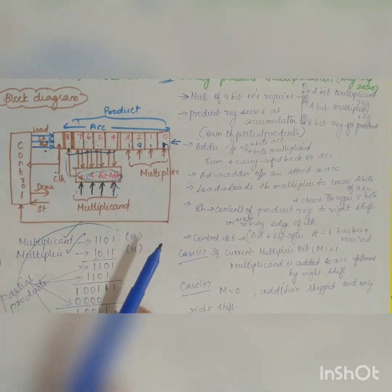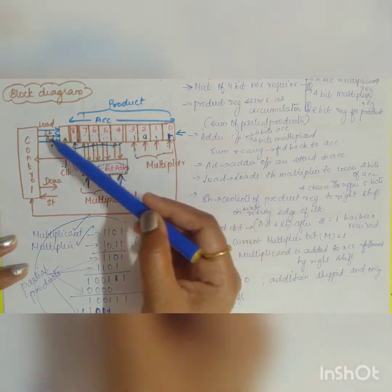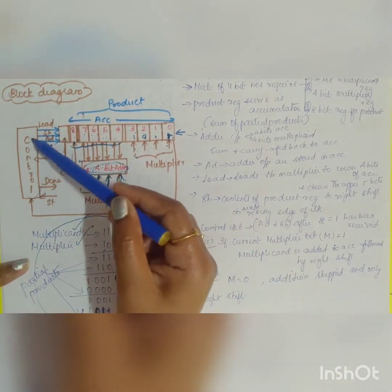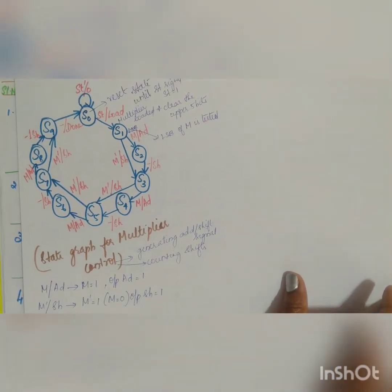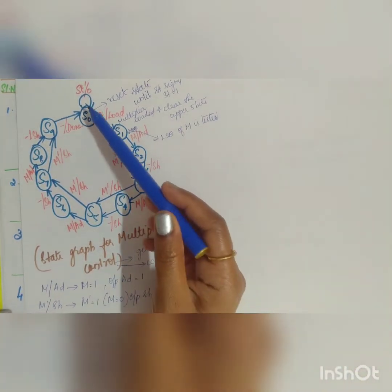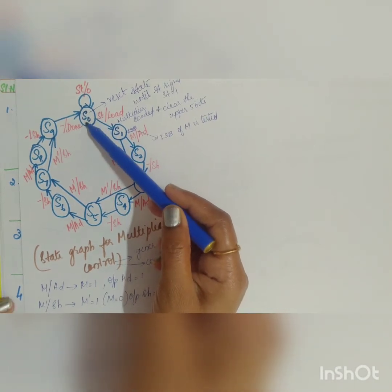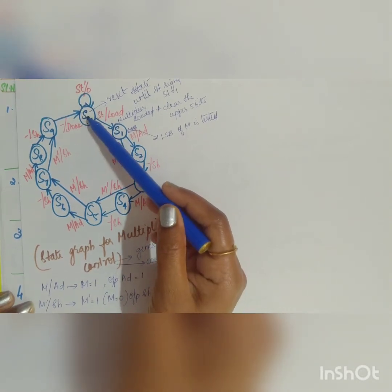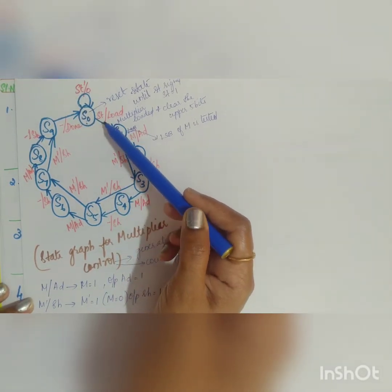The final product is 10001111, which is 143. In addition to the accumulator and adder, everything is controlled by the control unit. The working principle of the control unit is best explained by means of a state diagram — referred to as the state graph for the multiplier.